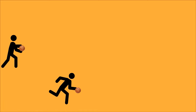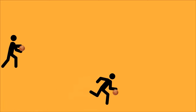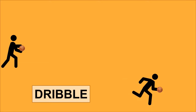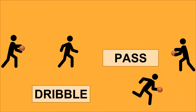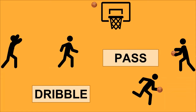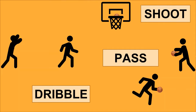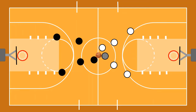The farther away you are from the basket, the more difficult it is, so you want to move closer. You can do this in two ways: first, you can dribble the ball — bounce it between your hand and the floor. Second, you can pass the ball to a teammate. You can dribble, pass, and move as close as possible to the basket, then shoot. So you have three options at all times: dribble, pass, or shoot.